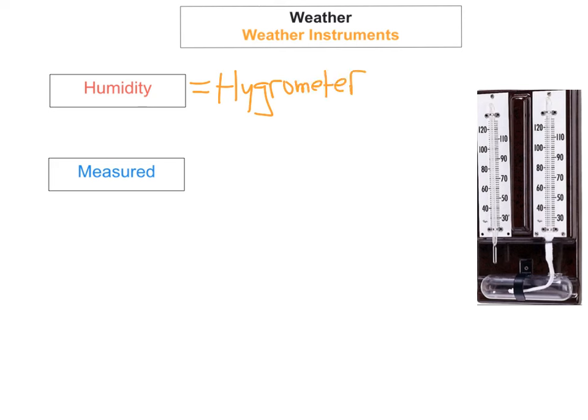Here's what the Campbell Stokes Sunshine Recorder looks like. The sun's rays shine through the glass onto a white strip. It burns marks along the strip, and we measure the lengths of the burnt strips, which are added up to give a total amount of sunshine.